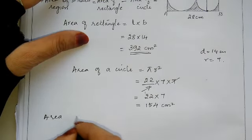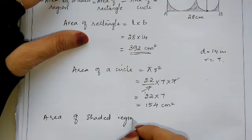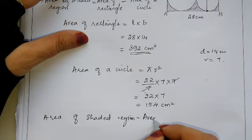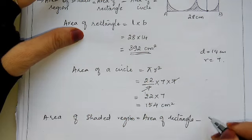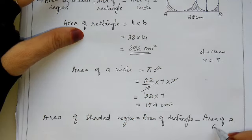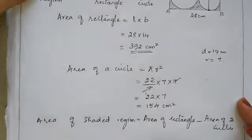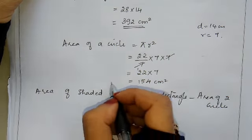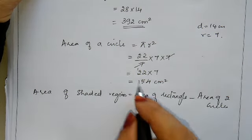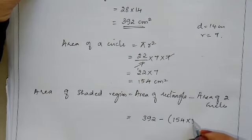Area of shaded region equals area of rectangle minus area of two circles. Area of rectangle is 392. Area of one circle is 154, so area of two circles is 154 into 2, which is 308.